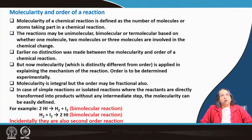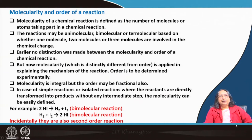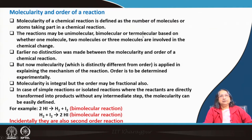What is the difference between molecularity and order of a reaction? Molecularity of a chemical reaction generally means the number of molecules that are reacting in a balanced equation. The reaction may be unimolecular where only one molecule is reacting, bimolecular where two molecules are reacting, or termolecular where three molecules are reacting. Earlier, we did not distinguish between molecularity and order of a chemical reaction.